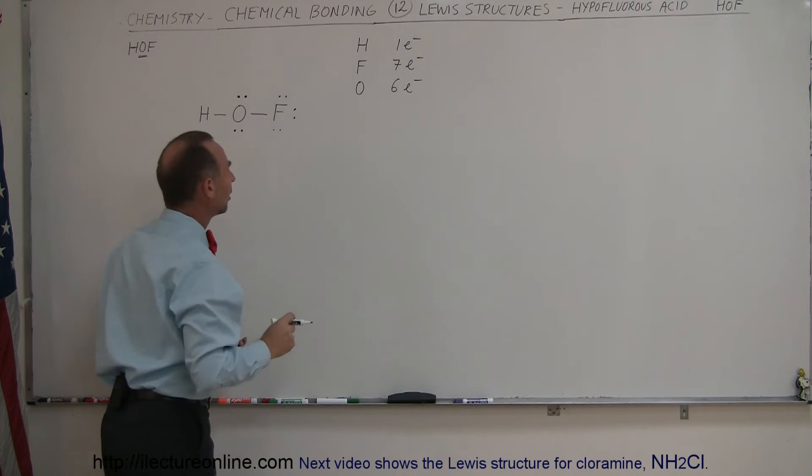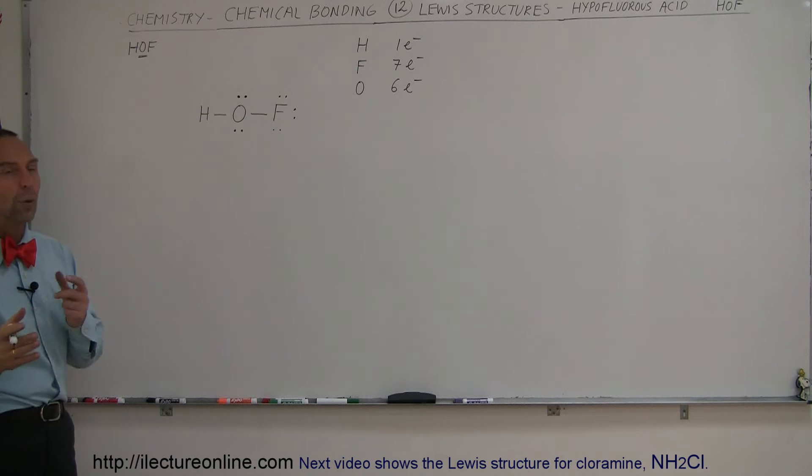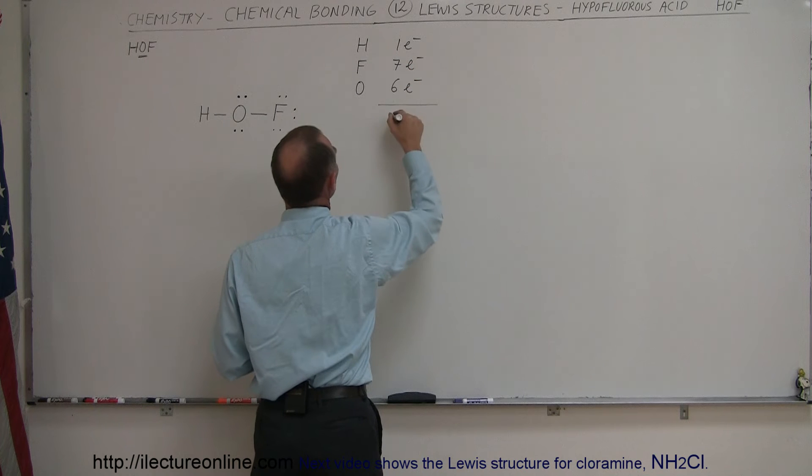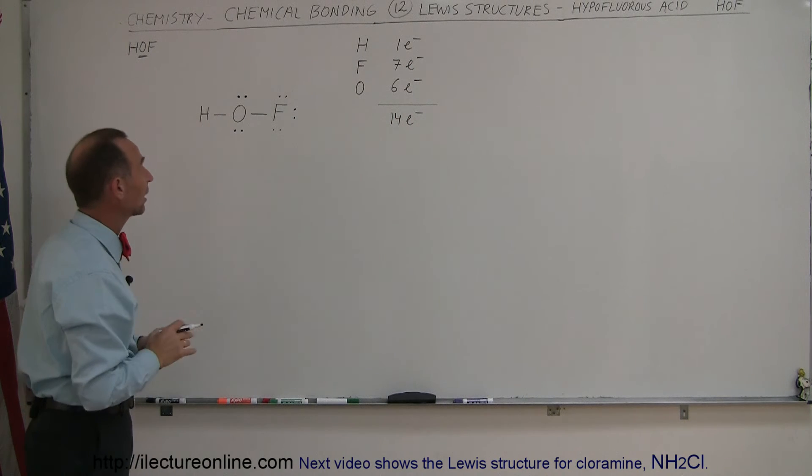And once we've done that, let's go ahead and see if we have the octet rule obeyed, and also make sure that we have the right number of valence electrons total. Since we only have one each of these, that would be 8 plus 16, or 14 valence electrons. So we should not have used more than 14 electrons here.